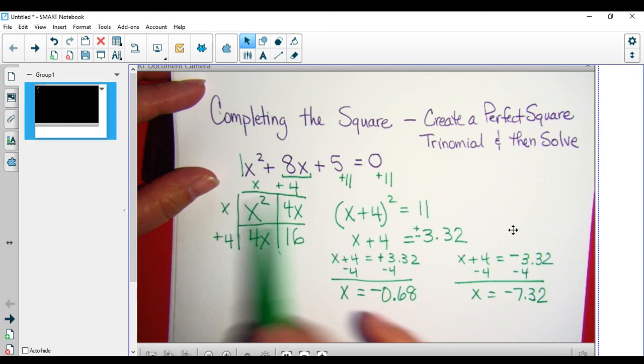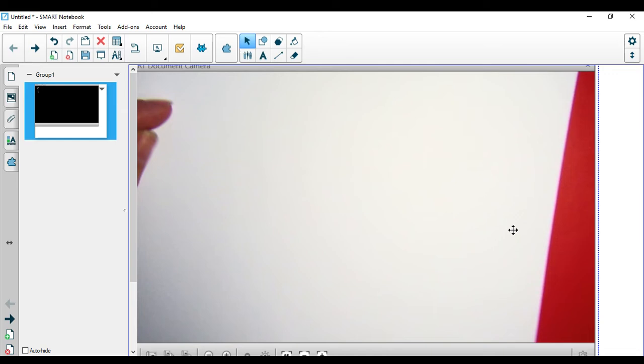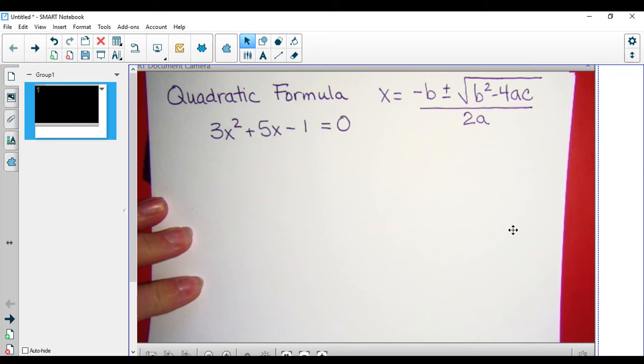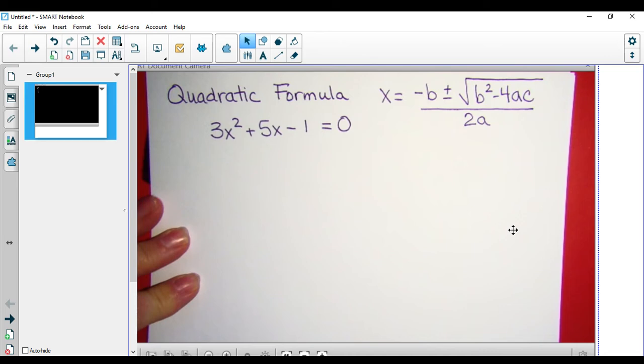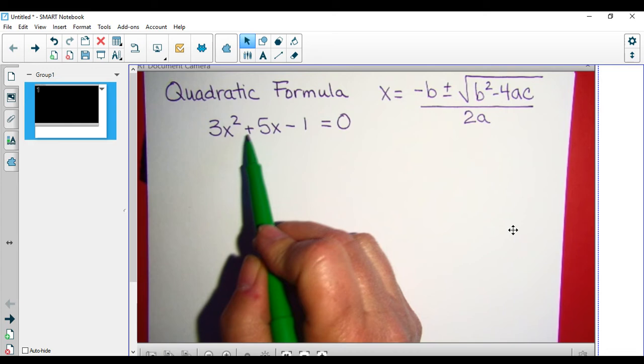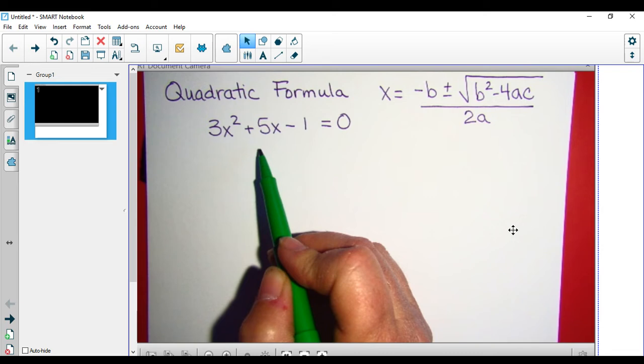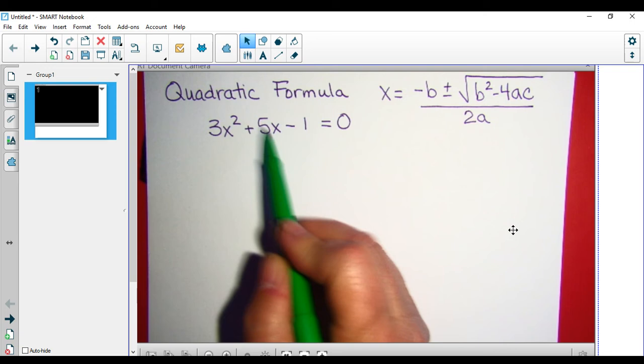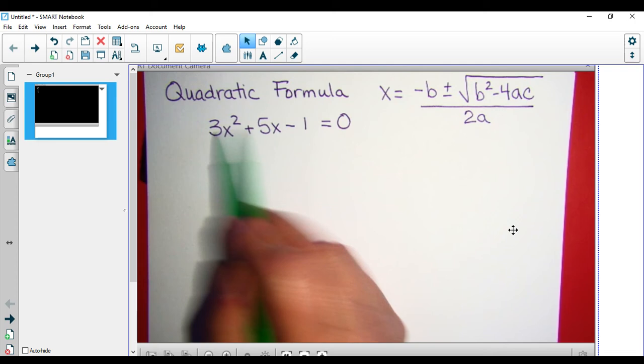But then there are times when neither of those is going to work, and we're going to need to use our quadratic formula. Some situations where that's going to be appropriate to use are when we have a leading coefficient that's not 1 or not a perfect square to make our completing the square work, when we have an odd number of x's for our middle term, when we have numbers that we don't think are going to factor easily to create that middle term, or if we have fractions or decimals for our a, b, and c values in that standard form.